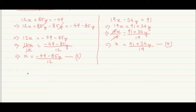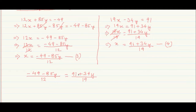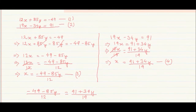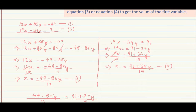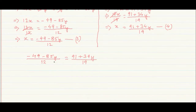We equate the right-hand sides of equations 3 and 4 to get the numeric value of the other variable, which in our case is y. Because both right-hand sides contain the y variable, we write: minus 49 minus 85y, all divided by 12, equal to 91 plus 34y, all divided by 19. In these two equations we do not have any term with a coefficient of 1, so we have to deal with fractions.